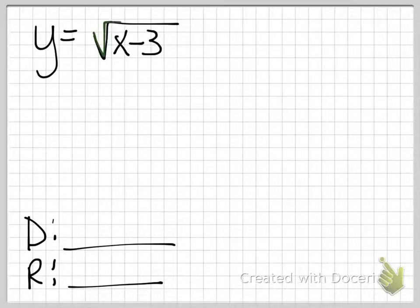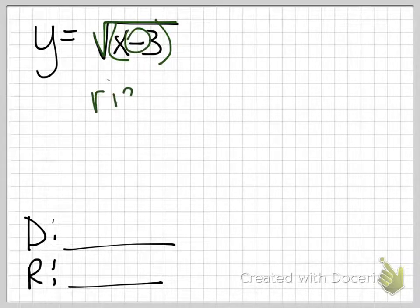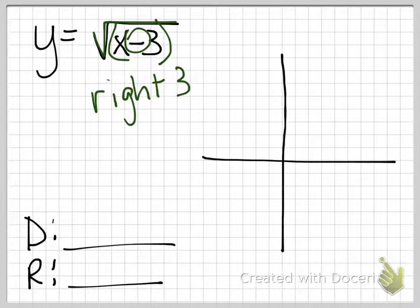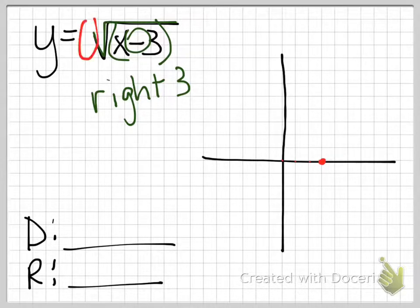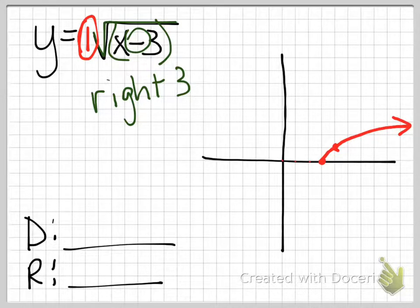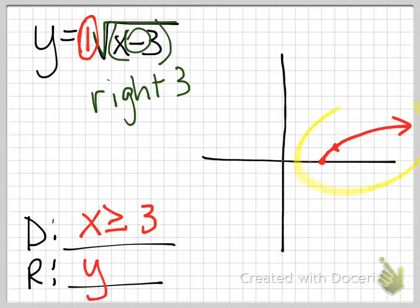This time we have minus 3, but it's inside the square root. Anything inside the square root with x is opposite, so this negative means it's shifted right instead of left — shifted right three places. I'm going to start at (0, 0) and then shift it right 1, 2, 3 places — that's my new starting place. There's nothing different before the square root, so that's still a slope of 1. Up 1 over 1 gives my initial starting value. The domain has been shifted right three places, so x is greater than or equal to 3, while the y value is still greater than or equal to 0.